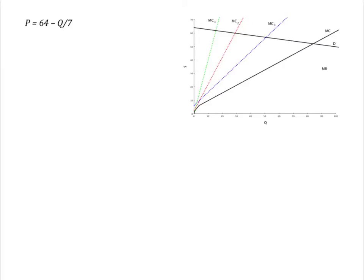With this demand, MR is just 64 minus 2 over 7Q.